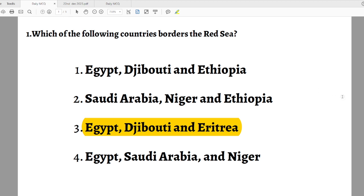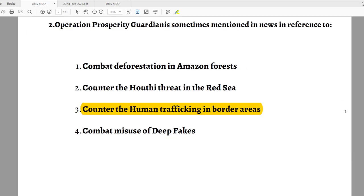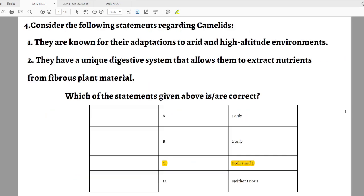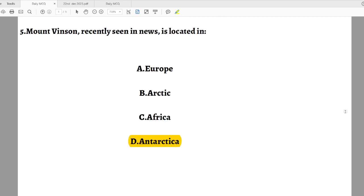That's all. Now we will see the answers for the previous. Question number one, answer is C. Question number two, answer is C. Question number three, answer is C. Question number four, answer is C. Question number five, answer is D. That's all about the current affairs and MCQ. Thanks a lot for joining with us.